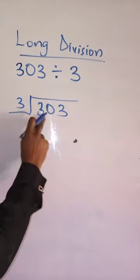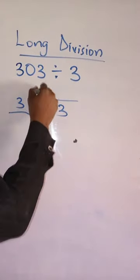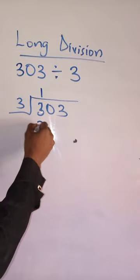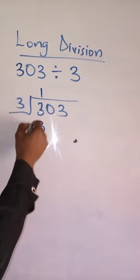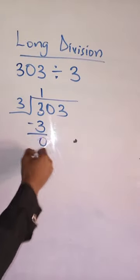This is simple. So divide — 3 divided by 3 is 1. 1 times 1. 1 times 3 is 3. Minus 0.